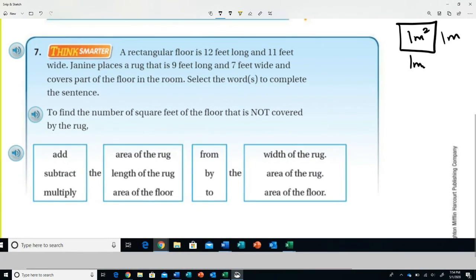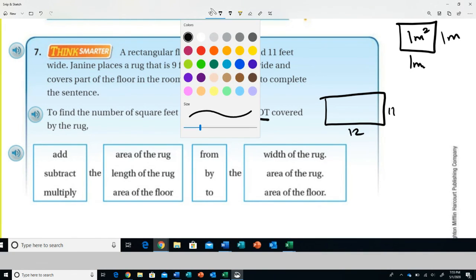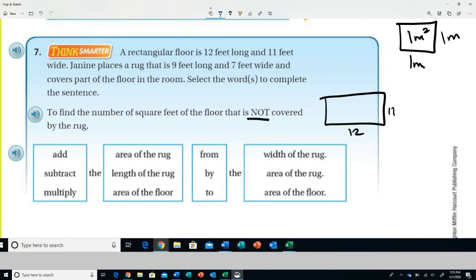Question number seven. A rectangular floor is 12 feet long and 11 feet wide. Janine places a rug that is 9 feet long and 7 feet wide and covers part of the floor of the room. Select the words to complete the sentence. To find the number of square feet of the floor that is not - I want you to pay attention - not covered. So she would have something that looks like this: 12 feet by 11 feet with an interior rug that is 9 by 7.